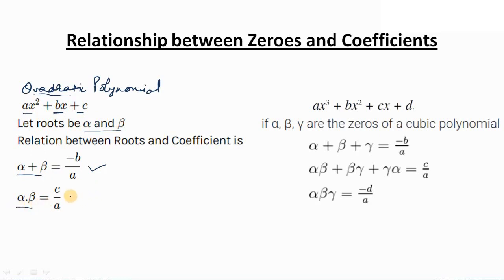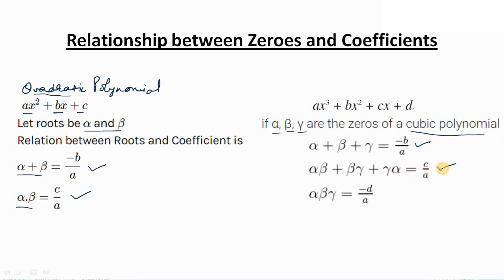For a cubic polynomial of the form ax³ + bx² + cx + d, because it's cubic, there are going to be three zeros. If we consider alpha, beta, and gamma as three zeros, then the sum of zeros alpha + beta + gamma equals minus b upon a. Alpha·beta + beta·gamma + gamma·alpha is the sum of product of zeros taken two at a time, equal to c upon a. And the product of zeros alpha × beta × gamma equals minus d upon a.